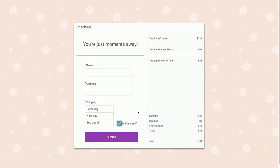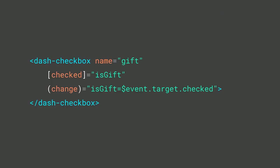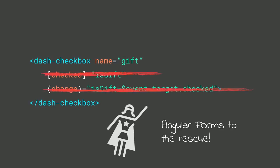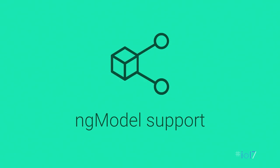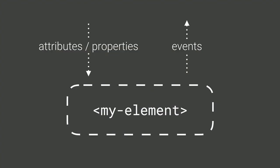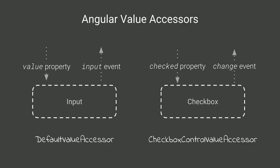We manually wire up the event listener, setting the isGift property to the event target's checked property when the change event fires. Now when we click the checkbox, all properties are set declaratively and the entire Angular application runs change detection to render the new state. This is how we manually wire things up: property binding to set state, and event listeners for emitted events. But that's not actually the easiest way — we want to use Angular forms, which are based on the idea of ngModel.